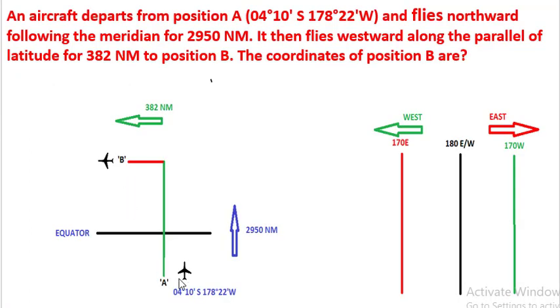Understand the question. The aircraft is at position A and it travels 2950 nautical miles northward, and then reaching this point it travels 382 nautical miles to the west to position B. We have to find the latitude and longitude of position B.